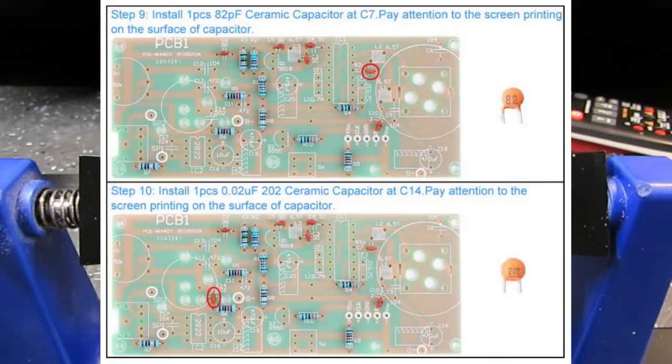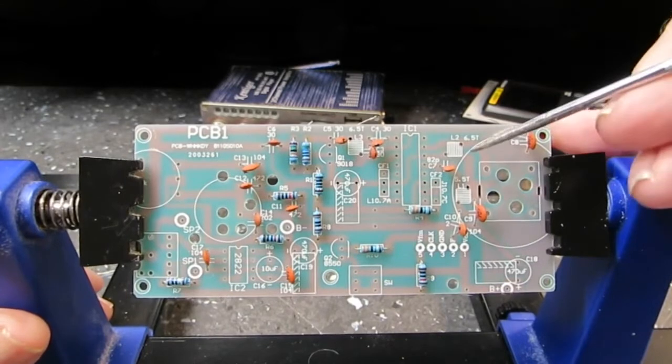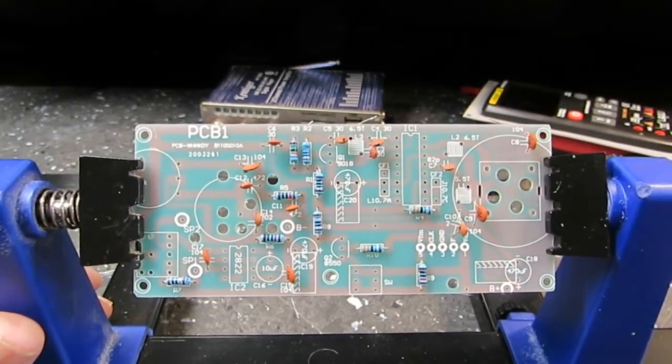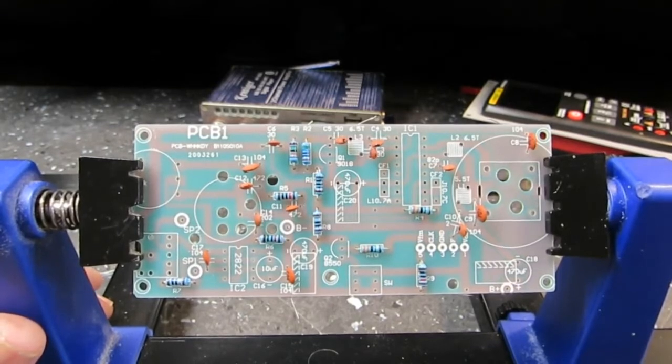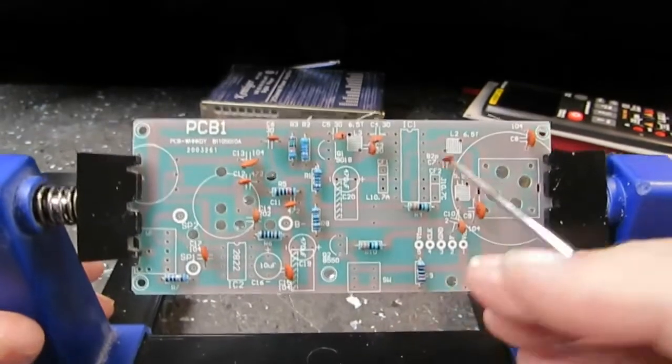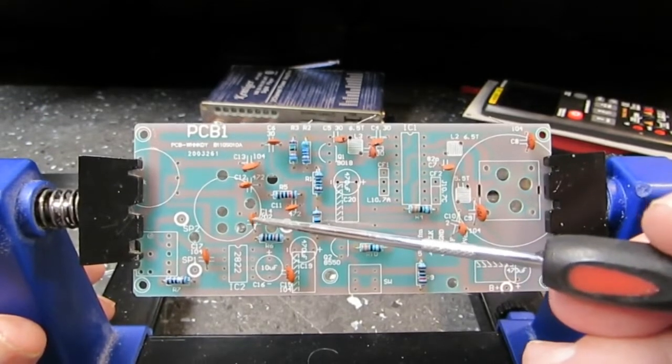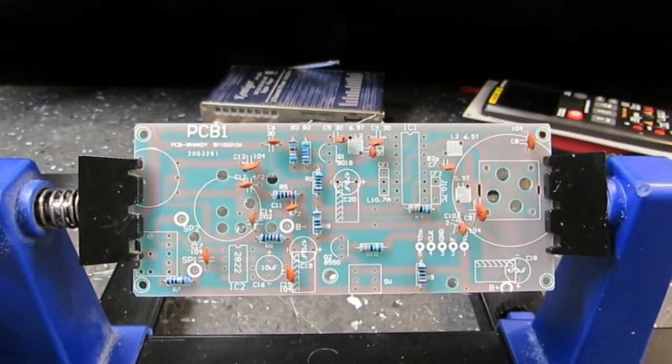Step nine says install one piece of 82 picofarad ceramic capacitor at C7. And that would be right over here. 82 picofarad, as you can see. Step ten, it says one piece of .02, 202 ceramic capacitors at C14. That one is down here. If we look carefully right there, you can see it. C14, 202. Right there.